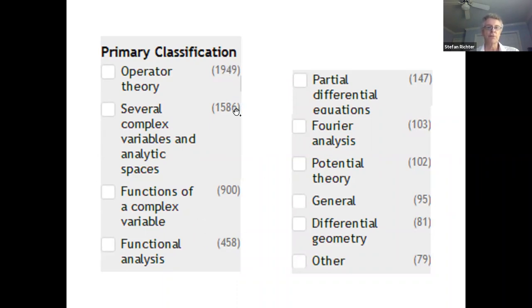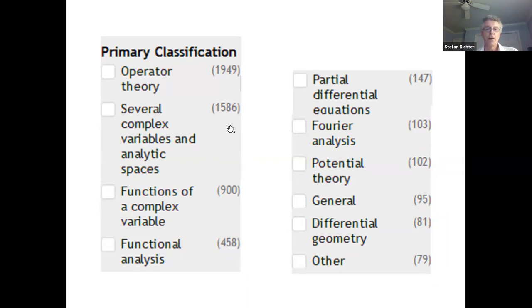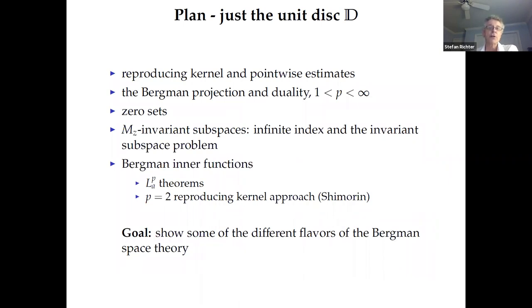What Bergman had done was he showed that the Bergman kernel and a conformal map from one region onto another are related to one another. That works in one variable and in several complex variables. It's especially important in several complex variables where it is harder to construct conformal mappings between regions in C^n. That's why there are so many papers in several complex variables. In my talks I will focus on operator theory and function theory in the open unit disk.